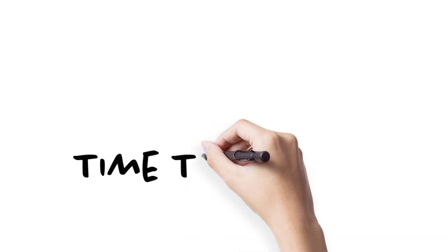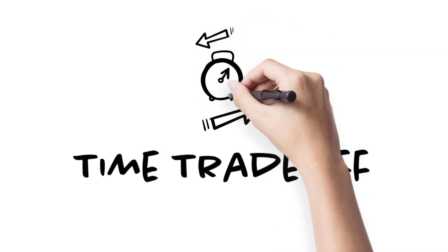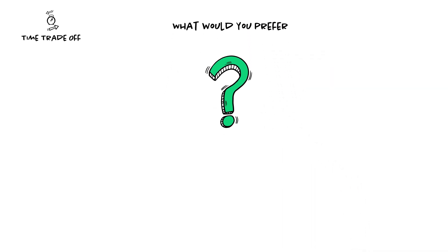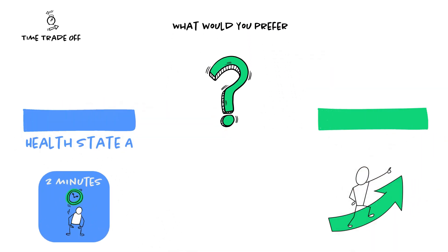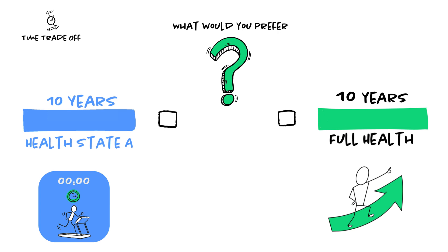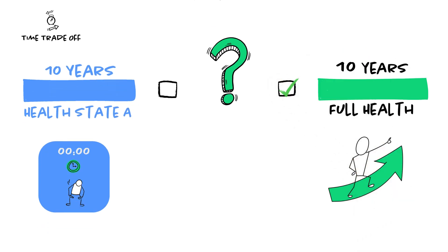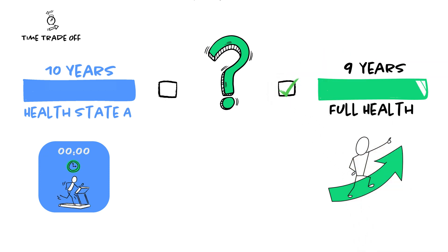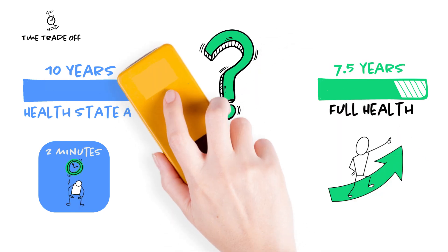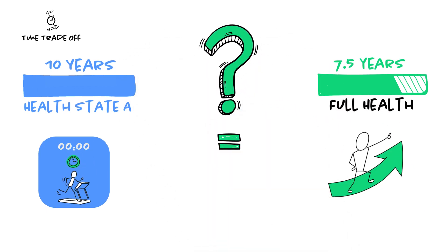The time trade-off is a choice-based method, which reflects the length of remaining life expectancy that a person may be prepared to trade off in order to avoid remaining in a sub-perfect health state. A choice should be made between living in health state A for a pre-specified duration reflecting life expectancy — for example, 10 years — or living in full health for the same duration. All people prefer to live 10 years in full health rather than 10 years ill. But what if we replace it by 9 years in full health? What if we consider 8 years? Or 7? In other words, we determine how many years a respondent would need to live in full health to make this option exactly as desirable as being in health state A for 10 years.